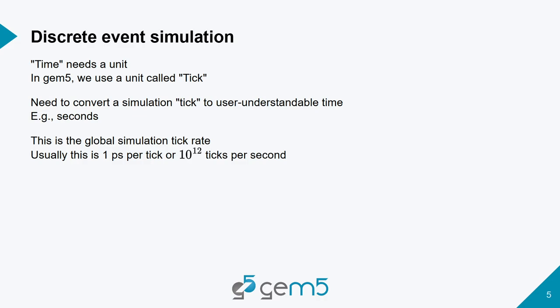Time needs a unit. In Gem5, the unit of time is a TIC. You cannot have any time smaller than one TIC — it's like a quantum of time. Everything is described as a number of TICs: clock cycle periods, global time. By default, the number of TICs per second is 10^12, or in other words, one TIC is one picosecond.